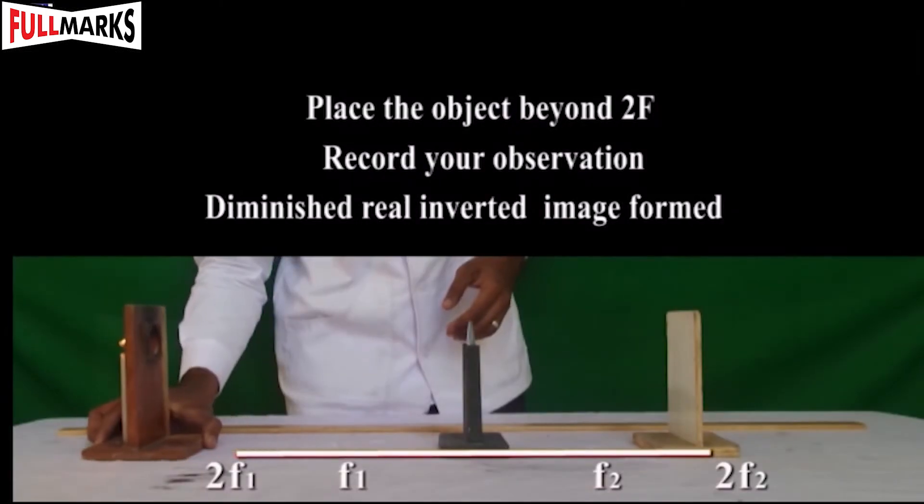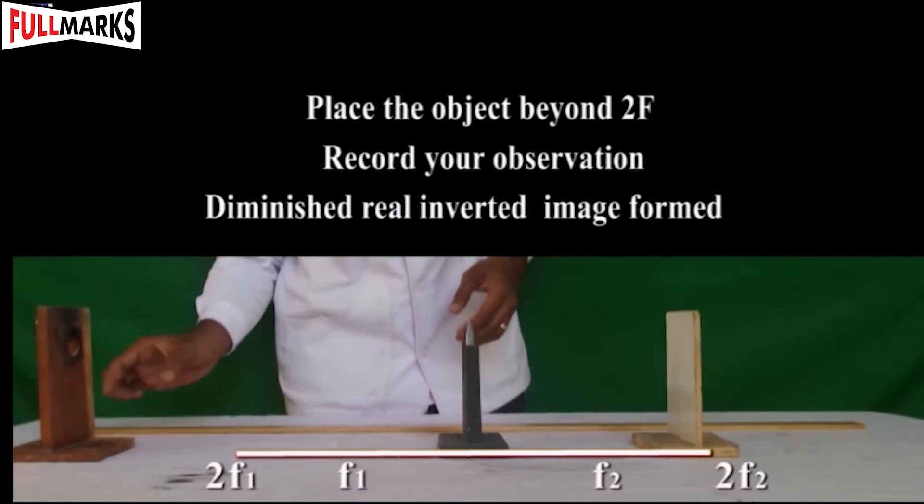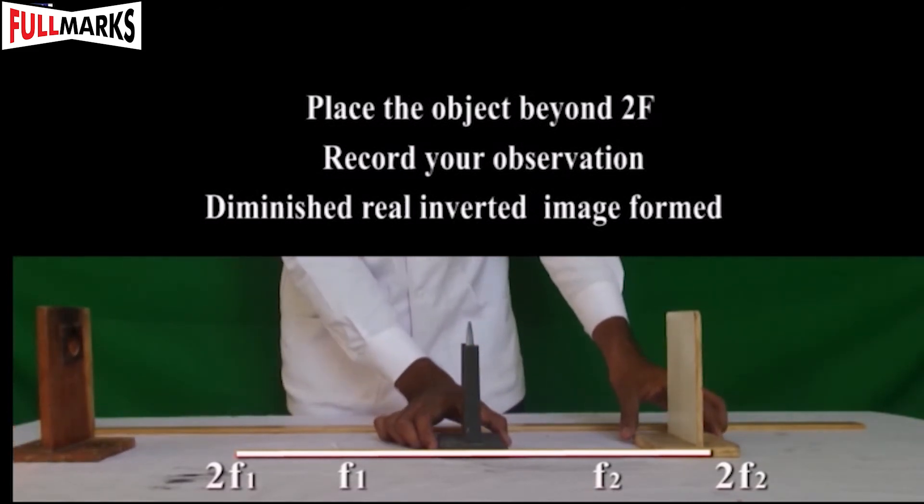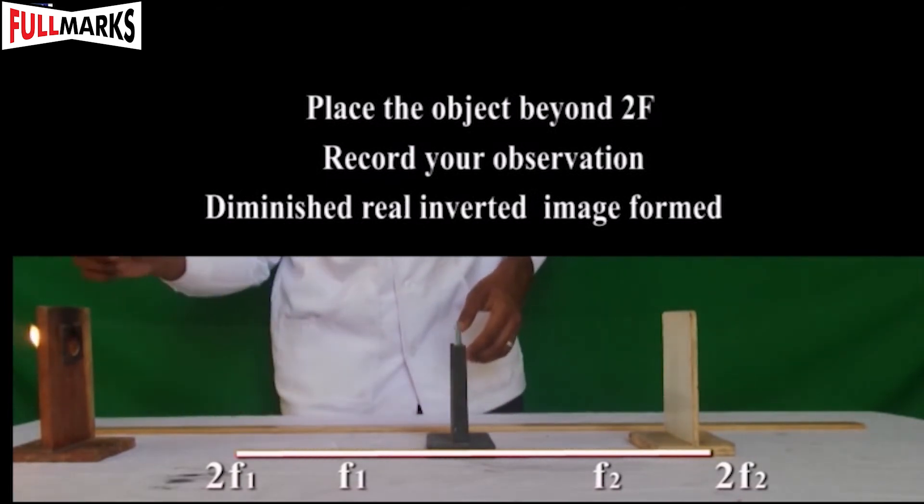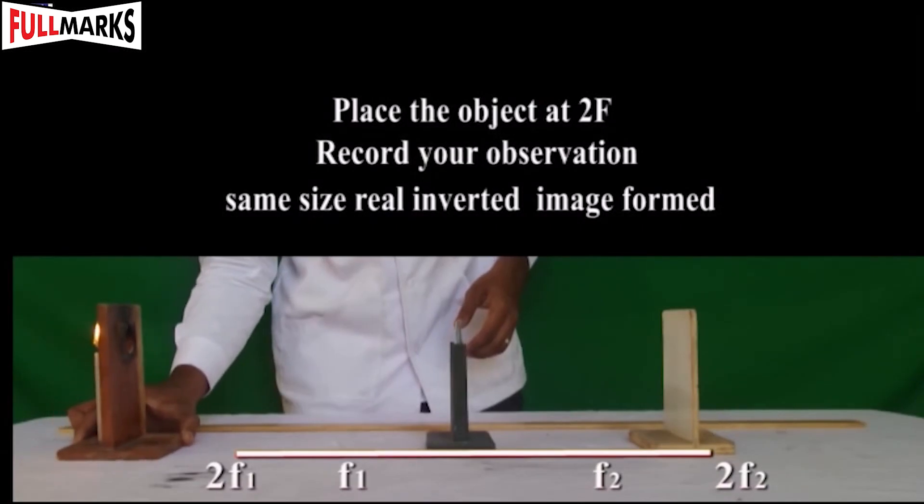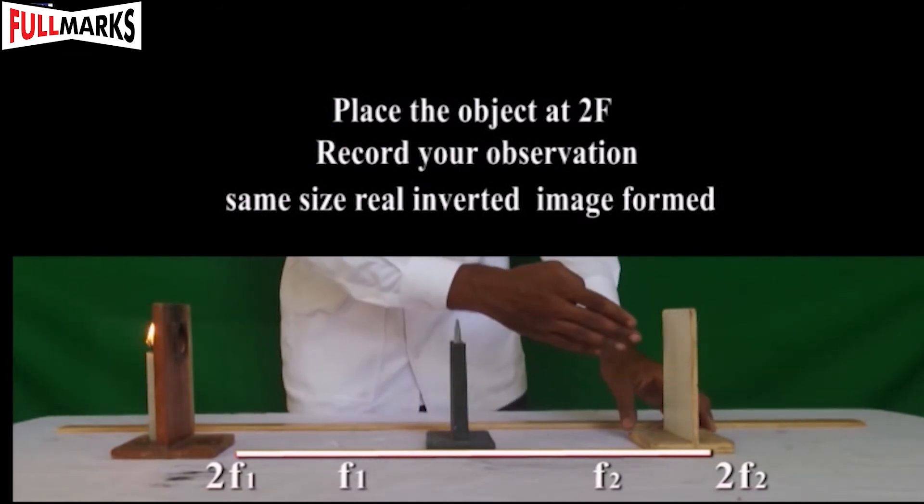Place the candle on the optical bench at a distance beyond 2F and record your observation. Now, place the object at 2F and record your observations.